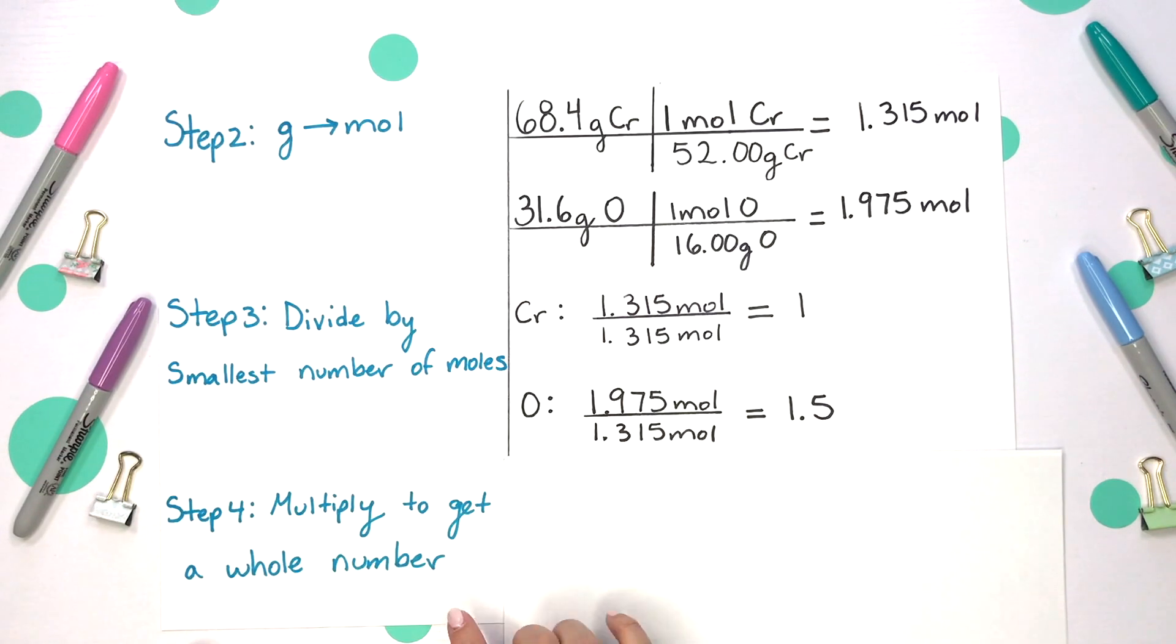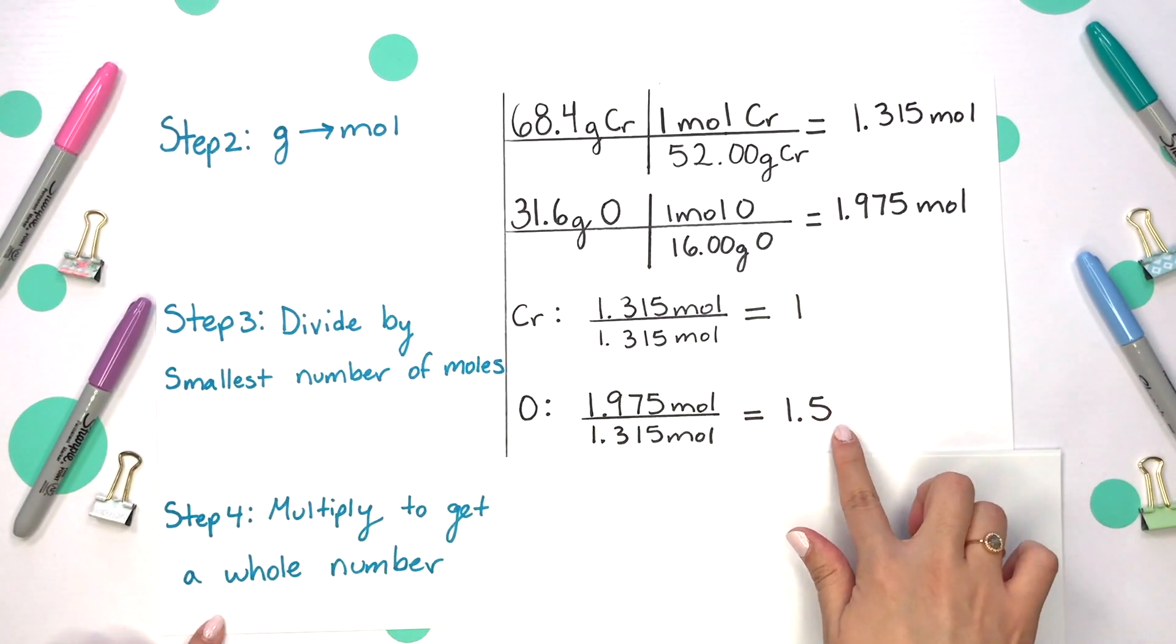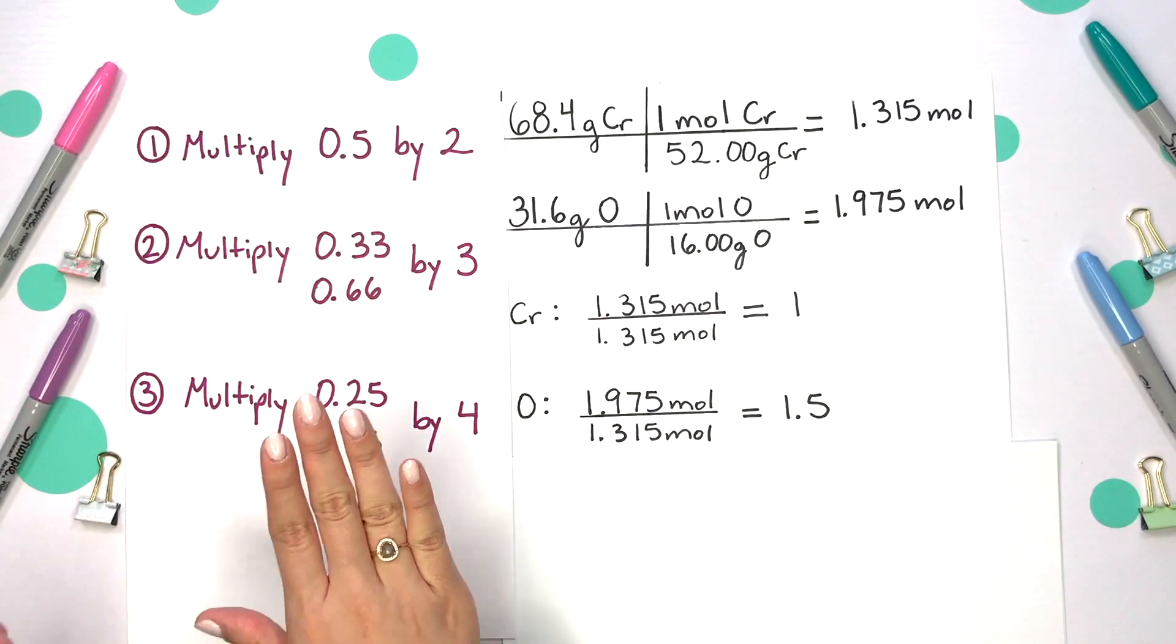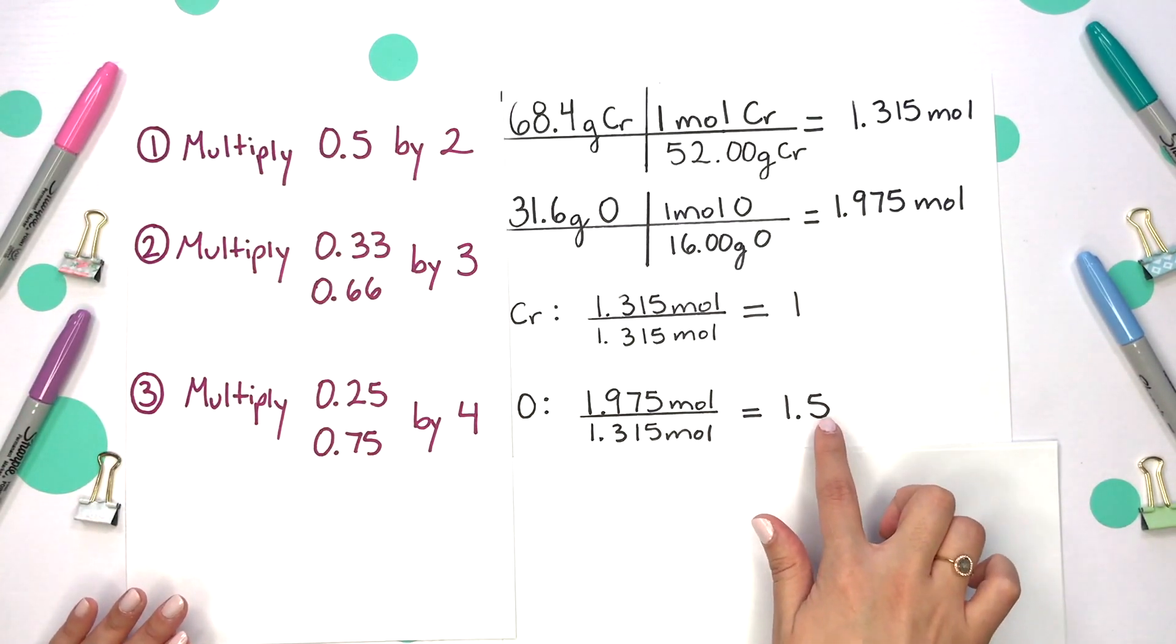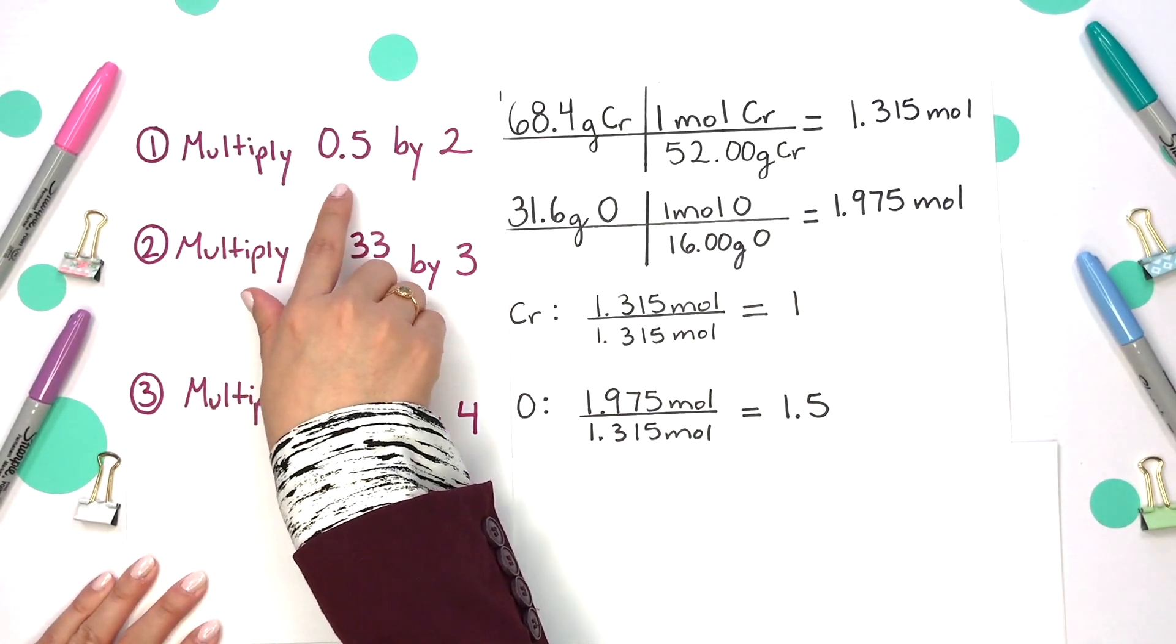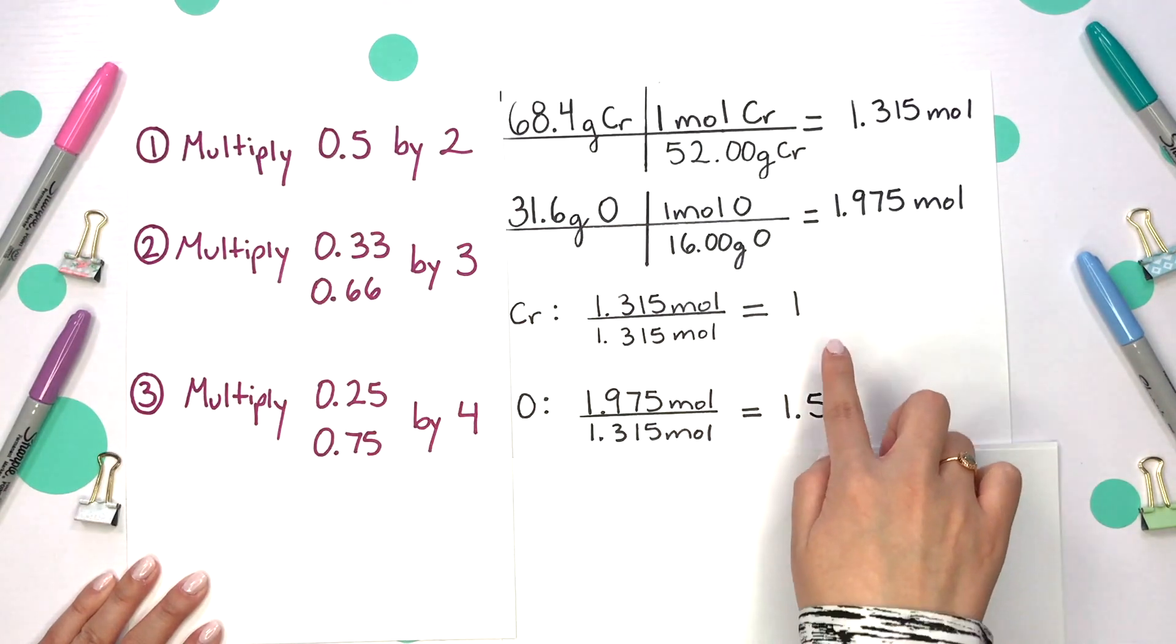Your next step is to multiply these numbers, these subscripts, to get a whole number. So in our case we have 1.5. We have a decimal ending in 0.5. So whenever you have any sort of decimal ending in 0.5, multiply each subscript by 2.